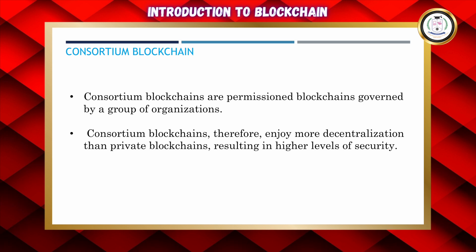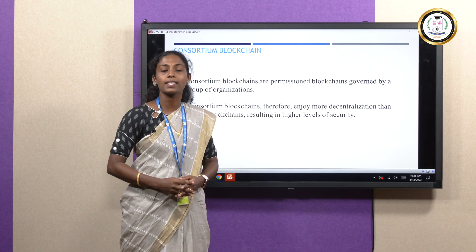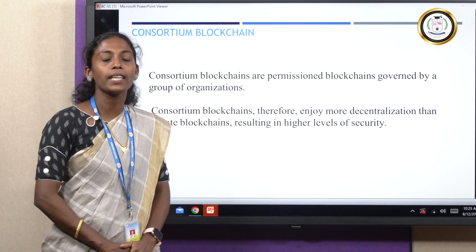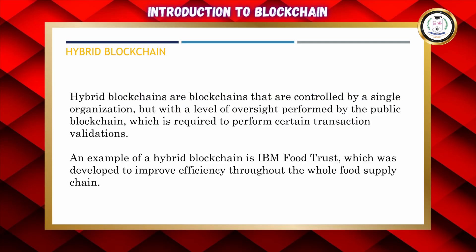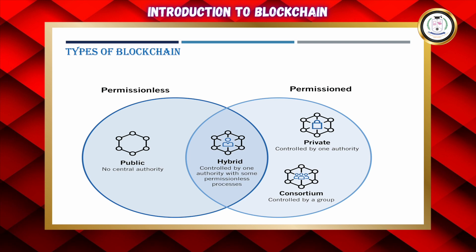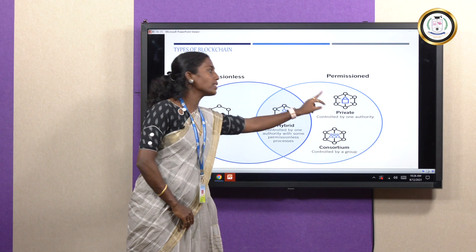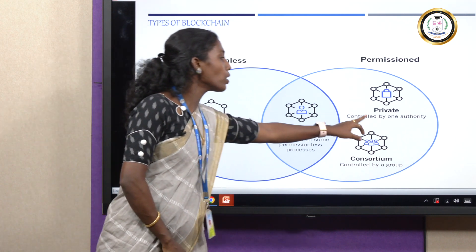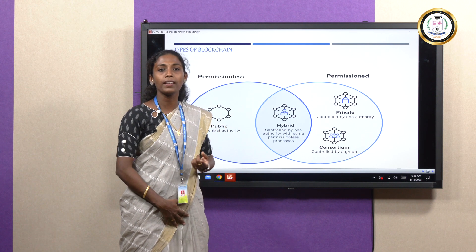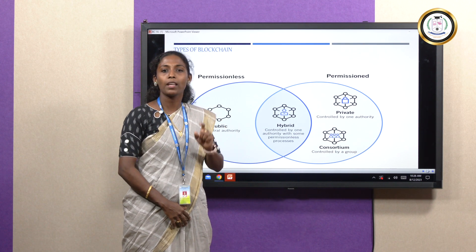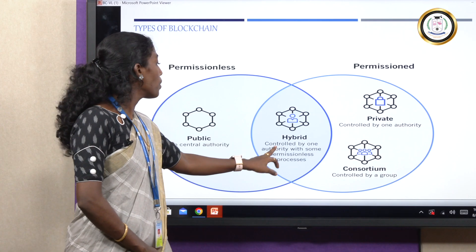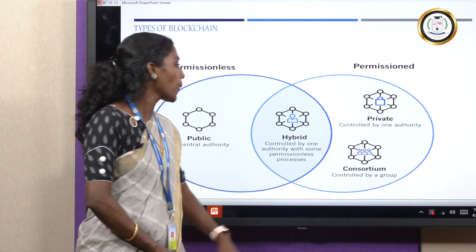The third type is consortium blockchain, where a group of organizations come together to form a blockchain network — this is also a kind of permissioned blockchain. The fourth is hybrid blockchain, a combination of private and public blockchain, having features of both permissioned and permissionless. In a pictorial diagram: public blockchain has no central authority; private blockchain is controlled by one authority; hybrid is a combination of both; and consortium is a group of organizations' blockchain.